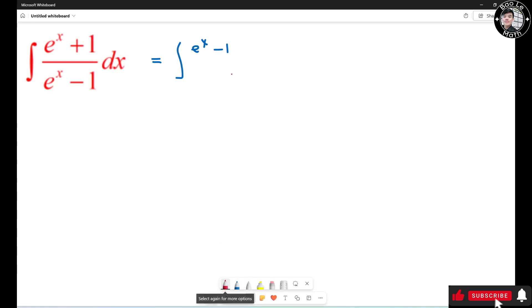So I just subtract 1, then I need to add 1. I'm going to add 1 right here, which means this becomes e to the x plus 1 over e to the x minus 1 dx.